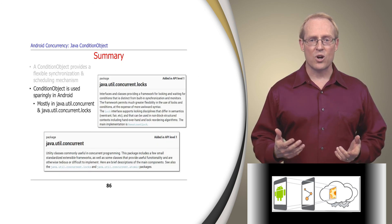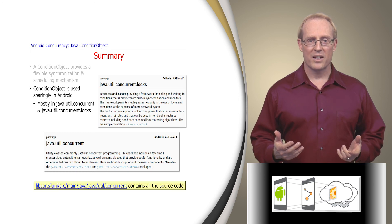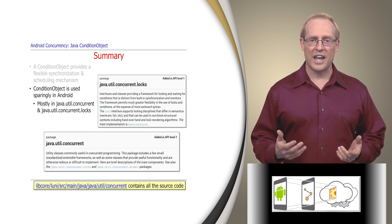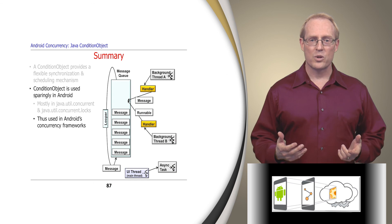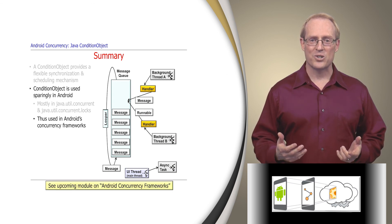Although condition objects aren't used much in Android application software, they are used in the underlying JavaUtilConcurrent package, and thus they're used by extension in Android's concurrency frameworks, which use JavaUtilConcurrent classes heavily, as we'll cover in the next module in this section.